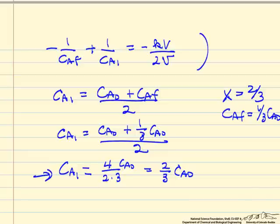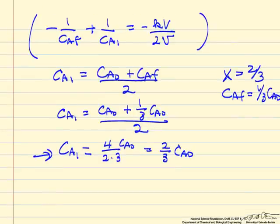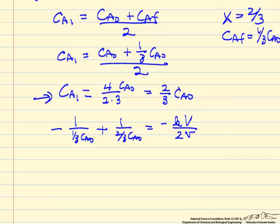We can go back to our mass balance and substitute in for Ca final and Ca1. And with that substitution, we can essentially just rearrange the equation so K times the reactor volume times Ca0 over the volumetric flow rate is equal to 3.